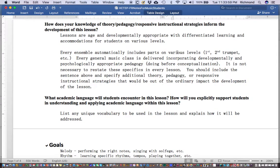Let's take a look at question two. How does your knowledge of theory, pedagogy, responsive instructional strategies inform the development of this lesson? Once again, I've reduced this to one sentence that I'd like you to include, and you should also amplify that should there be something out of the ordinary. The one sentence is: Lessons are age and developmentally appropriate with differentiated learning and accommodations for students on various levels.